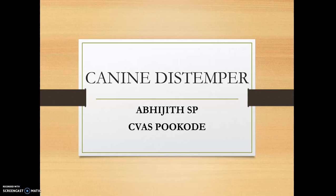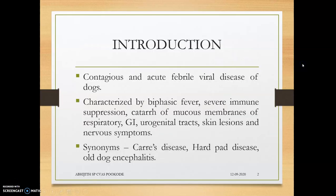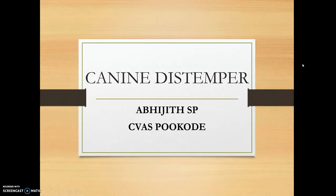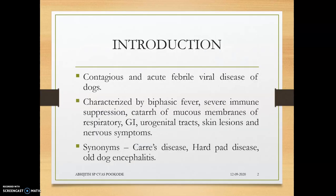Today we are going to discuss a disease of dogs — canine distemper. It is a contagious, infectious, acute febrile viral disease of dogs characterized by biphasic fever, meaning two phases of fever will occur.